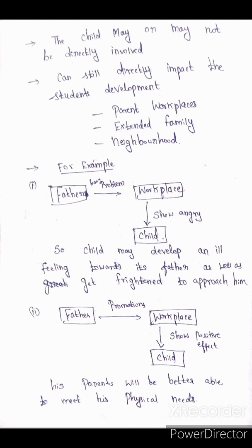On the other hand, if a father receives a promotion at his workplace, he will be in a great mood — smiling and positive — and the child will experience positive development. So the workplace can have either a negative or positive influence on the child through the Exosystem. One person's work environment has an influence on this Exosystem.